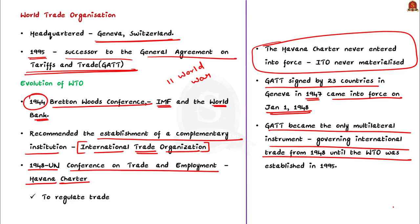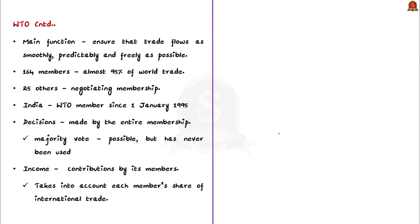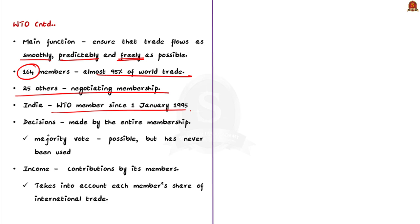Note that GATT was not an institution — it was merely an instrument that governed multilateral trade. WTO's main function is to ensure trade flows as smoothly, predictably, and freely as possible. WTO currently has 164 members accounting for almost 95% of world trade, with around 25 others still negotiating membership. India has been a WTO member since its inception on January 1st, 1995, and was a member of GATT since July 8th, 1948. Decisions in WTO are made by the entire membership — complete consensus. This is why the final outcome on intellectual property waivers for COVID-19 vaccines has not yet been achieved, as some countries are yet to agree.